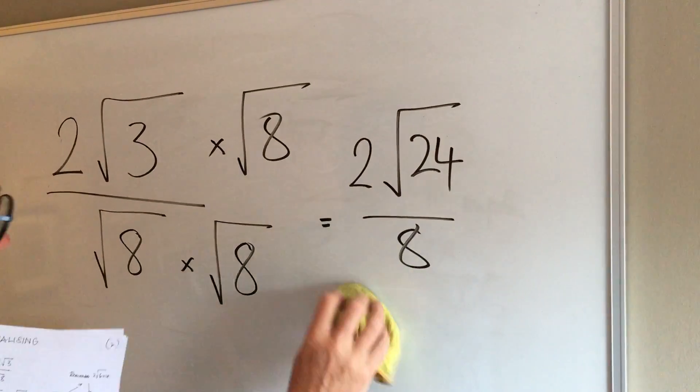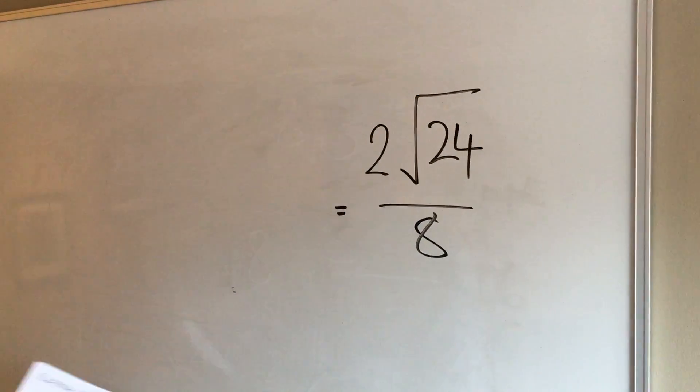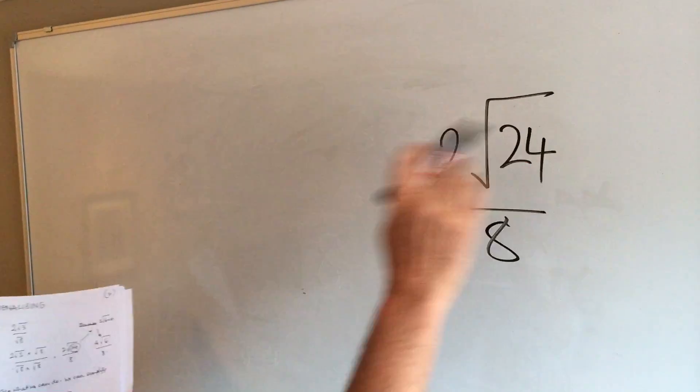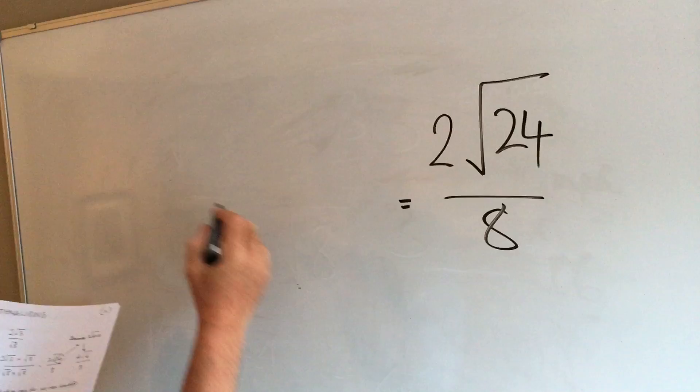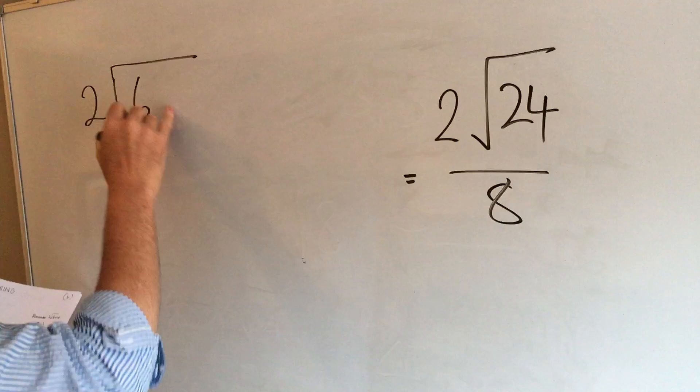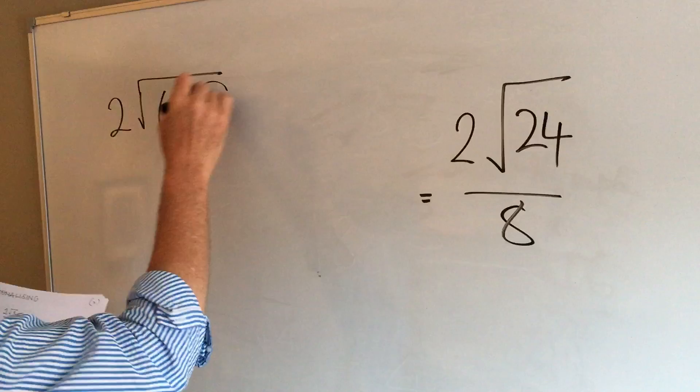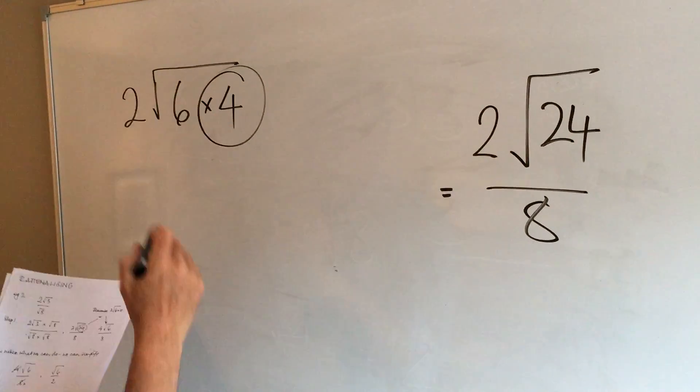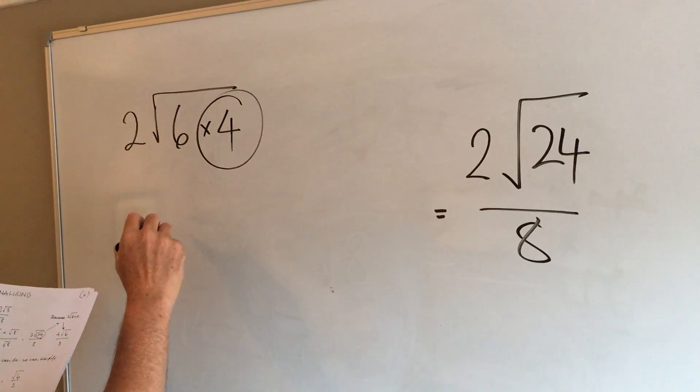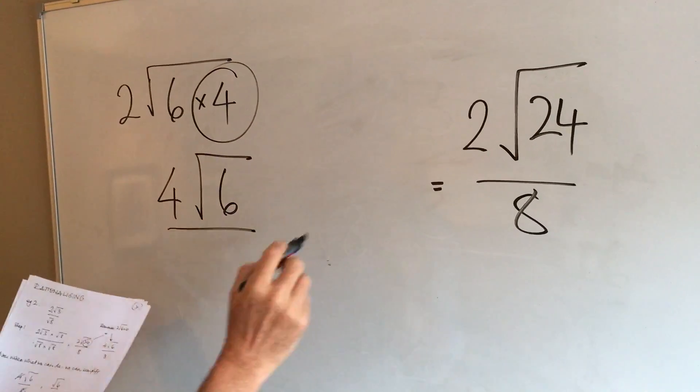Now then, we're moving to new territory here, so thinking about 2 root 24 over 8. When we've got the number inside of it, we're thinking about is there a square number in there? Well, there is, isn't there? Because what we've actually got is 2, and we could do root 6 times root 4 to get us to 24. You can see that we've got a square number in there. So we find the square of that, add it to the number outside the root. That simplifies to 4 root 6 over 8.